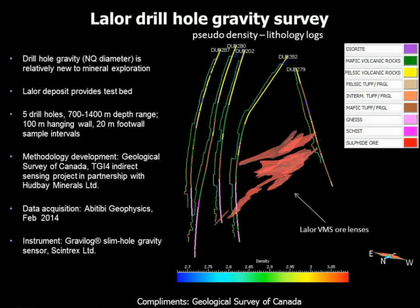Hole 279 was on the south up-dip side and the other holes are on the north edge, with a tremendous distance between them and the deposit straddled between. The reading interval was generally about 100 metres in the upper part of the hole in the hanging wall, and about 20 metres in the foot wall and around mineralization. That's a guide — there were some differences.